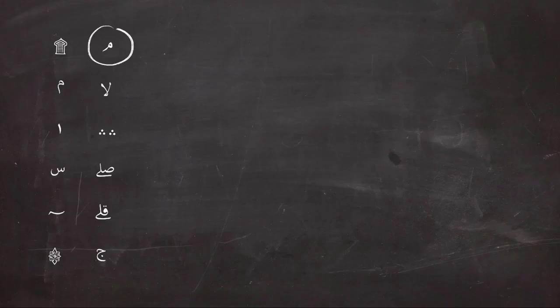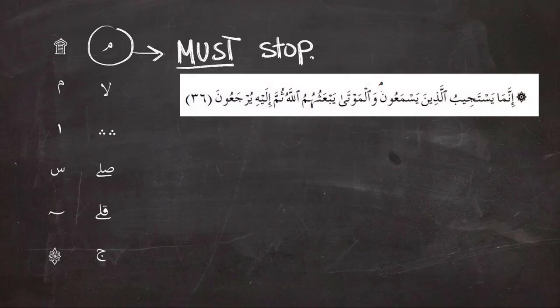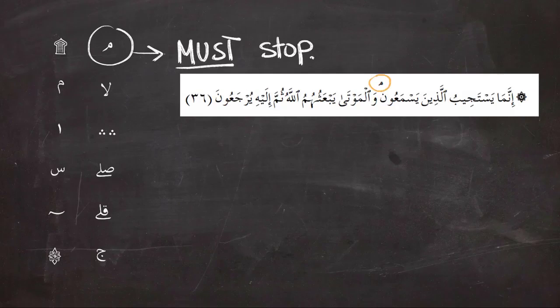We'll start with the first symbol that looks like Meem. It means you must stop while reading, otherwise the meaning of the ayah or verse will change. In this example, you should stop at the symbol, so we have to stop at the symbol of Meem.